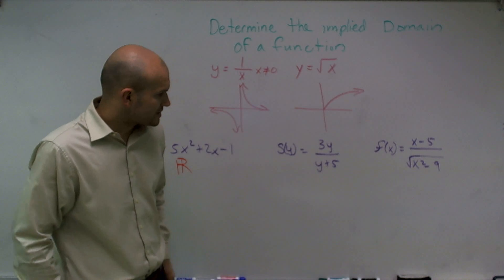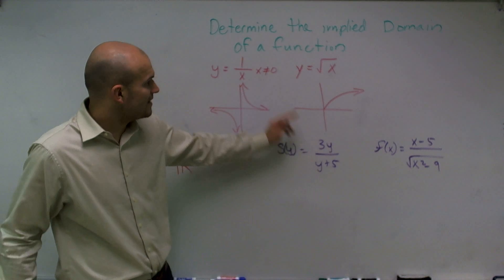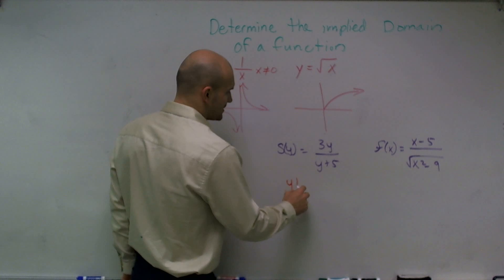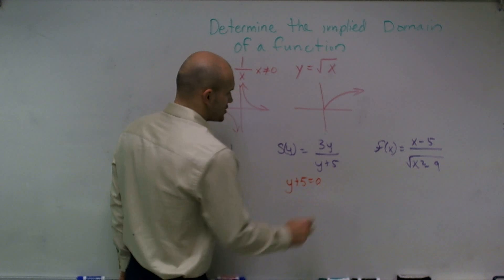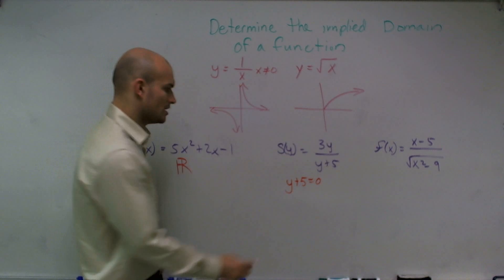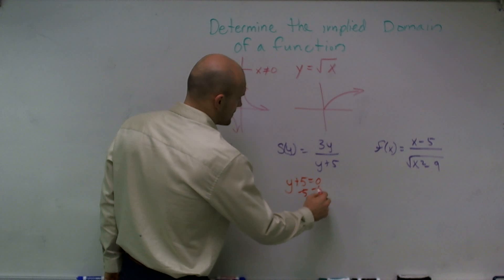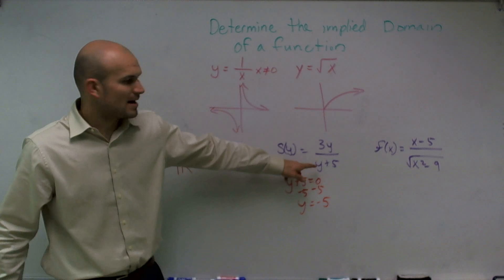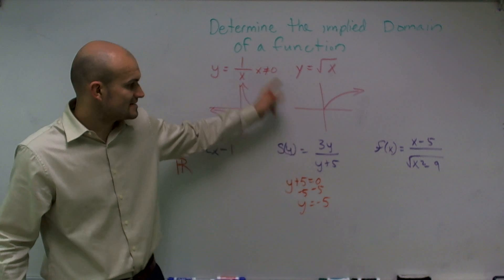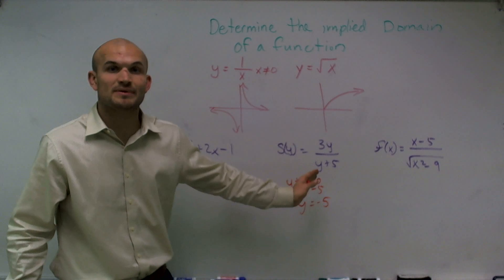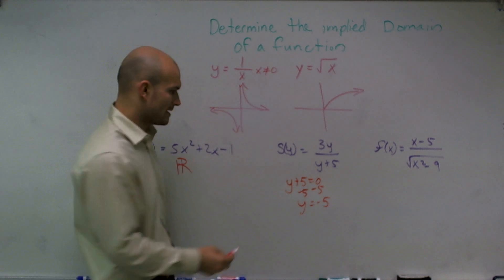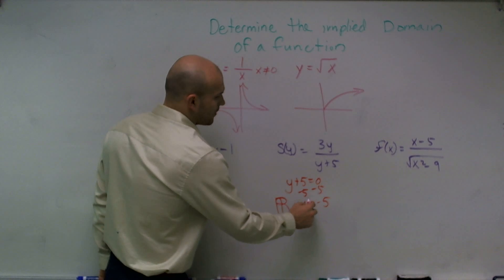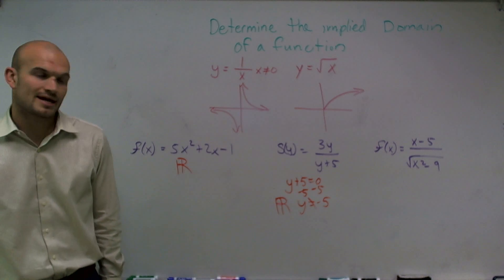However, in this function, I can have zero on the bottom. When can zero be on the bottom? Let's set the bottom equal to zero. So y plus 5 equals zero. If I solve, when y equals negative 5, my function is zero on the bottom. Therefore, it's not going to be defined when y equals negative 5. So when I write my implied domain, I'm going to say this is all real numbers except y cannot equal negative 5.